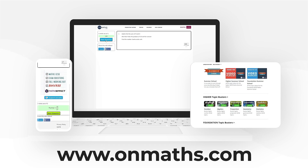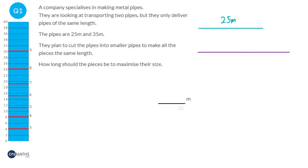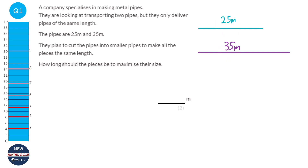If you like what we do please consider subscribing. So if we imagine we've got the 25m pipe here and the 35m pipe here. The question is basically asking us what can we cut all these pipes into, and they all have to be the same length that will fit with the 25m and the 35m. Essentially what this question is asking is: what is the highest common factor of 25 and 35?